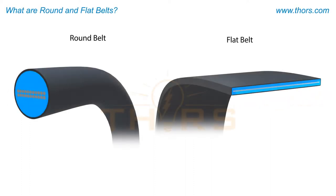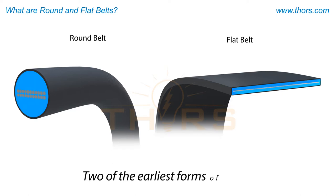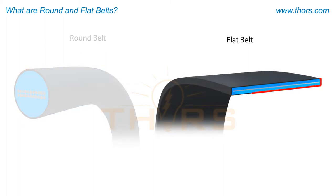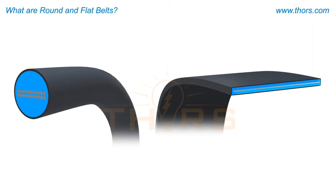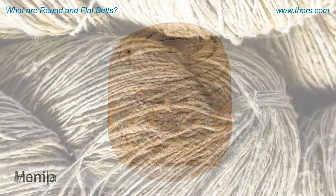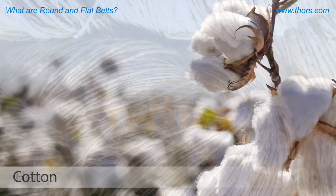Round and flat belts are two of the earliest forms of belts used for movement in the pre-industrial era. Round belts, also known as rope belts, are named for their circular cross-section, while flat belts are named for their flat profile. Early round and flat belts were made from naturally available materials like manila, hemp, cotton, and leather.